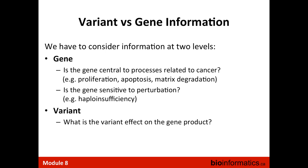When we perform next-generation sequencing of cancer genomes and extract variants — some related to genes, others to intergenic regions — we must consider information at two levels. At the gene level, once we identify a frequently mutated gene, we can ask whether it relates to cancer processes like apoptosis or cell cycle, and investigate sensitivity to perturbation using CRISPR or shRNA screens. But first we want to know the impact of a variant: whether it affects the coding region or a non-coding RNA. Various bioinformatics tools can help with this.